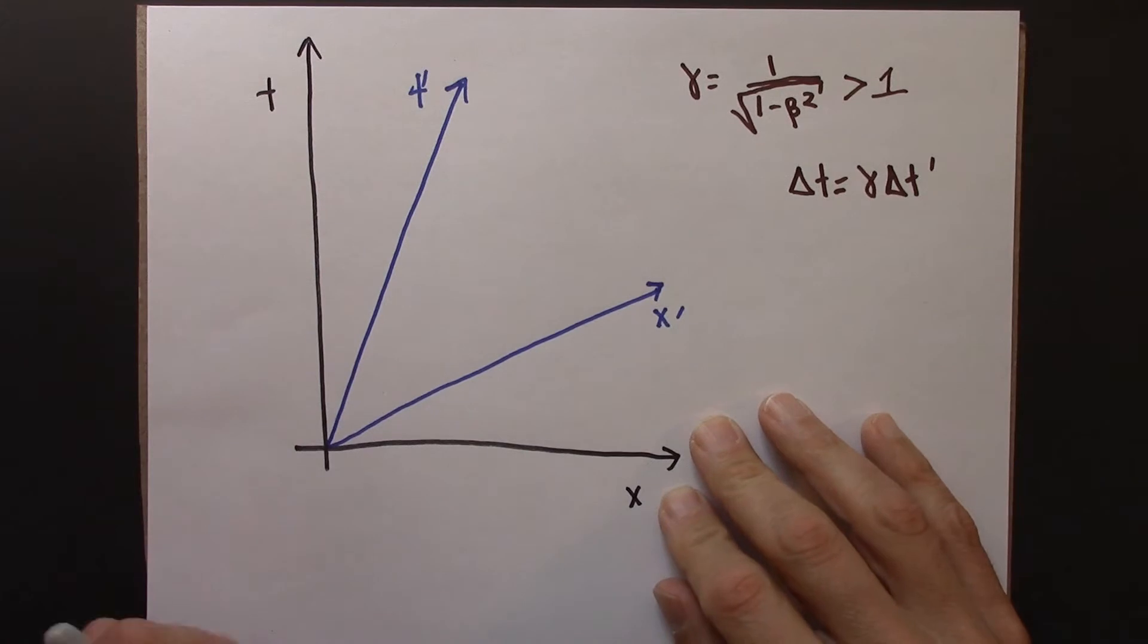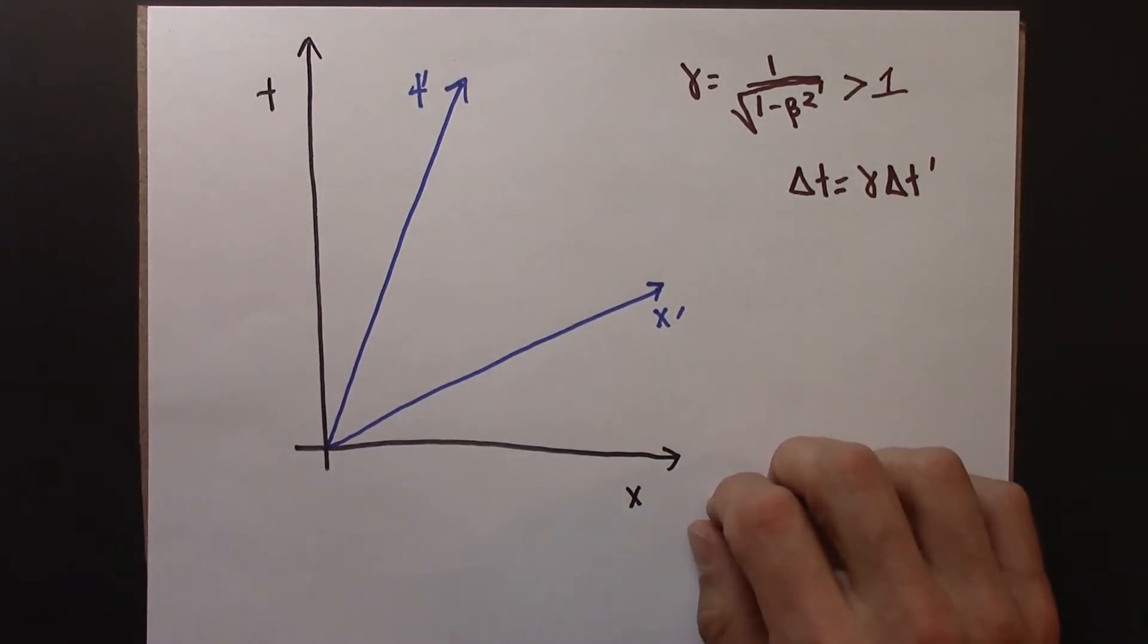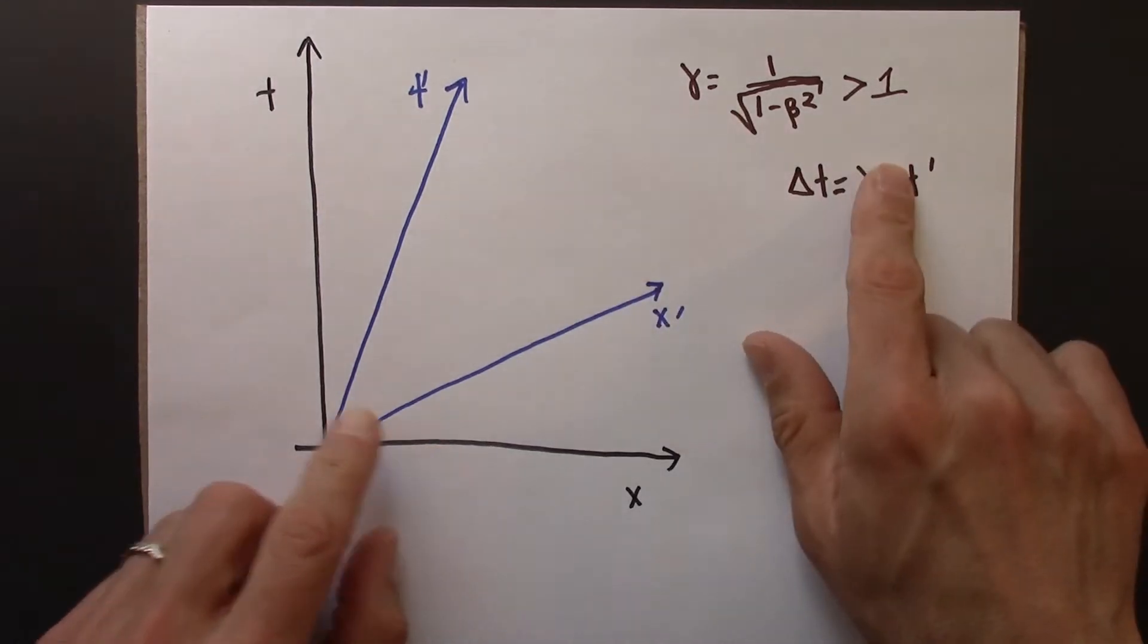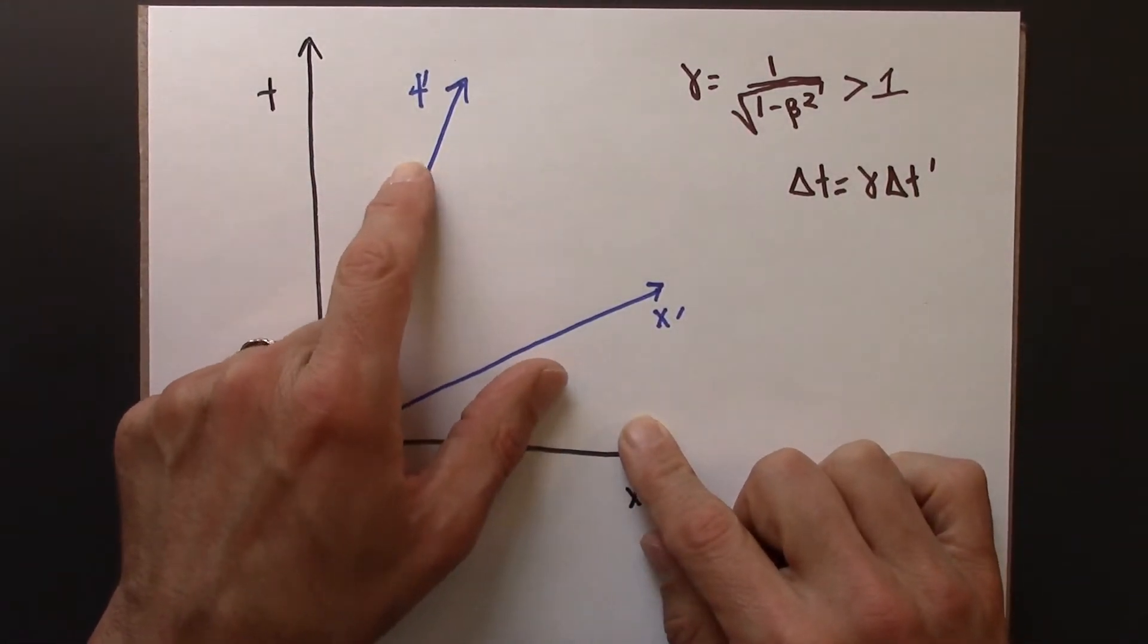So before we derive Lorentz transformations, I want to think again, just remind you a little bit about how we calibrate the primed axis. These are the axis of the moving frame of Beowulf.